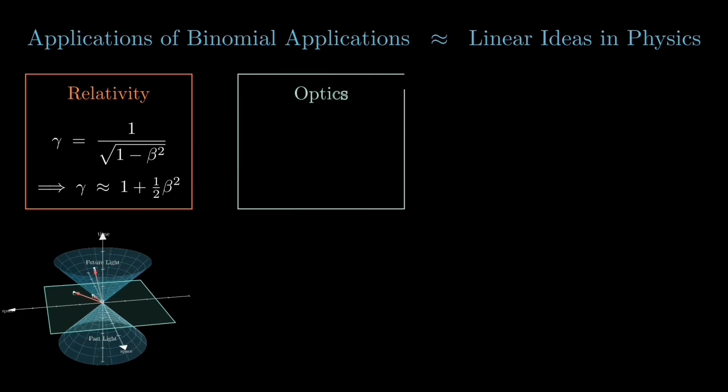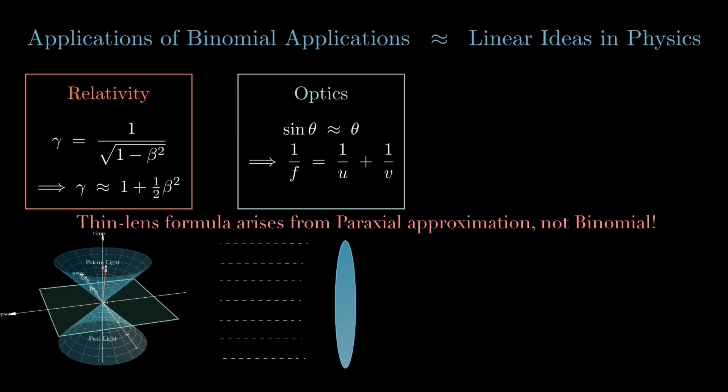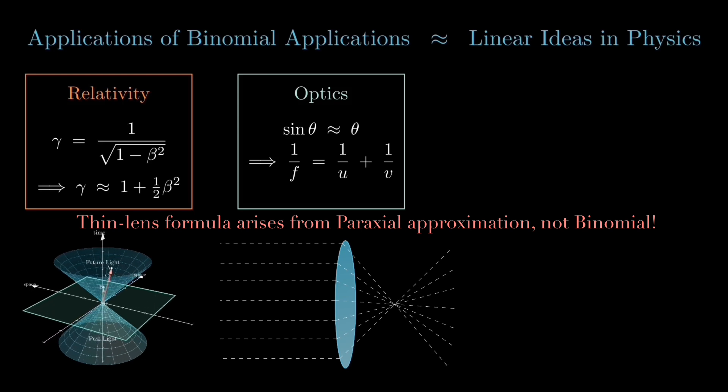Now what about the thin lens formula and optics? Is that binomial too? Well, not exactly. It comes from a small angle approximation, but just like the binomial approximation, it turns complexity into something usable.